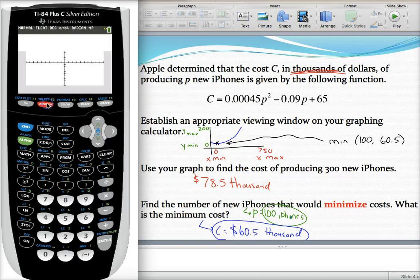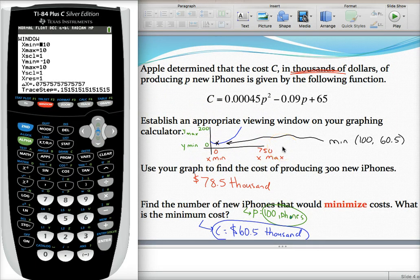Go ahead and press window. You can see down here the values I ended up using to get a picture of the graph. But let's say I didn't know those off the top of my head. I need to use common sense and logic to figure out the size of this window. I always ask myself: what does the input value stand for? What does the output value stand for? In this case, P stands for the number of iPhones produced.